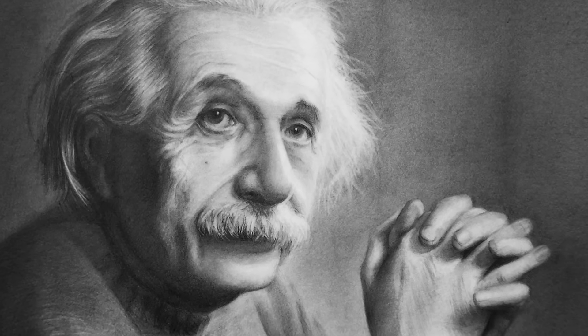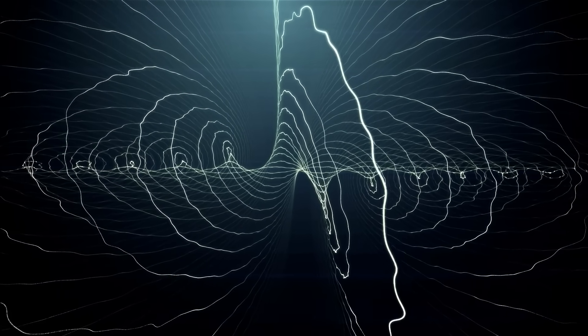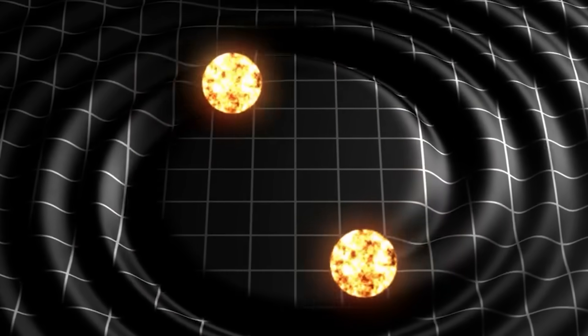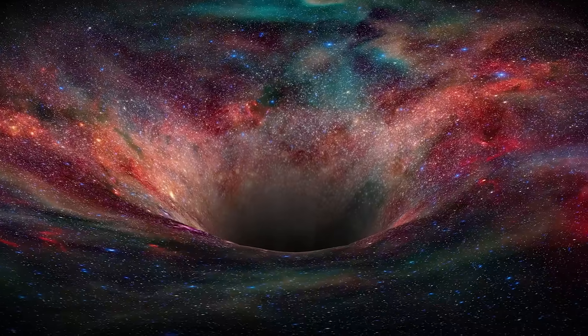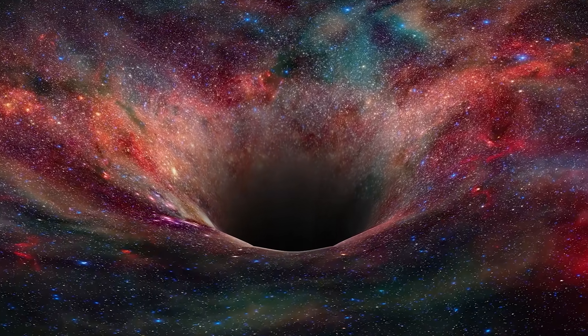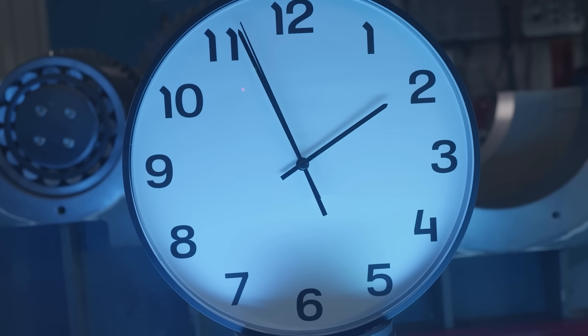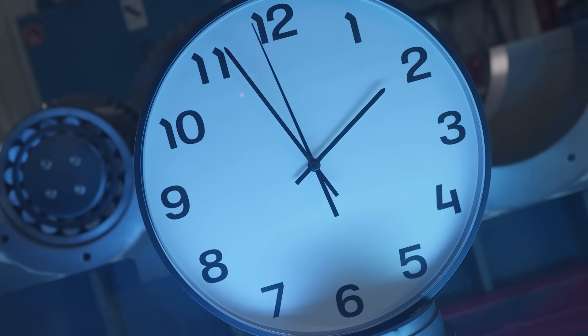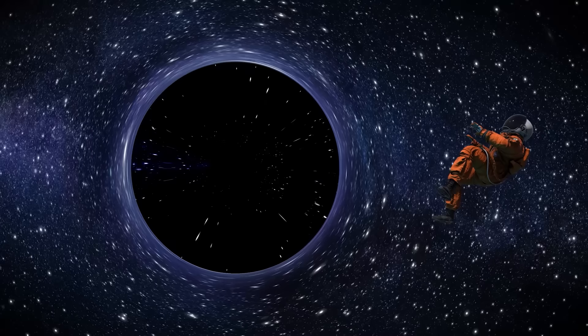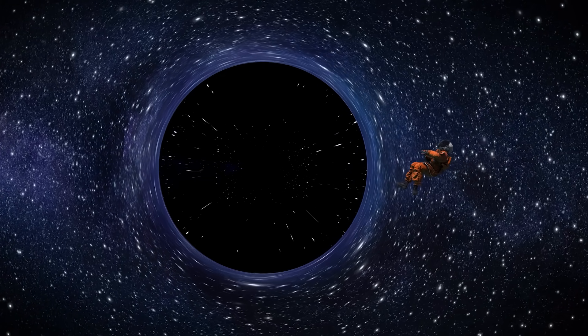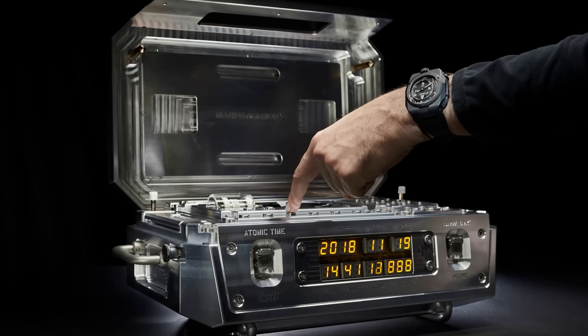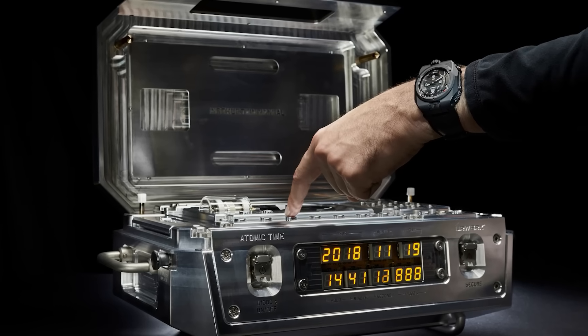Einstein's general theory of relativity describes space and time as a four-dimensional elastic fabric, and he called this fabric space-time. This fabric is curved by mass and energy. Planets, stars, and black holes bend space-time, and this curvature creates what we experience as gravity.